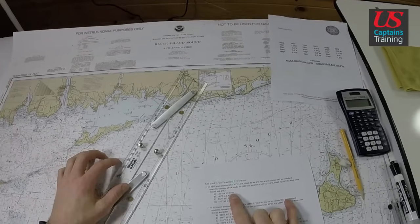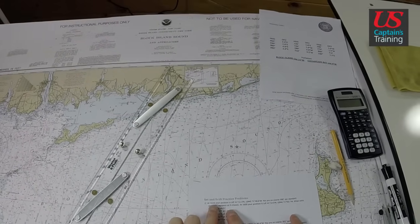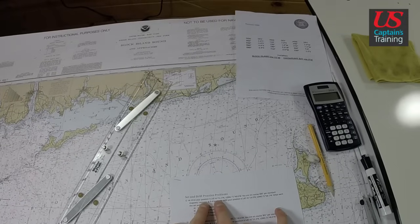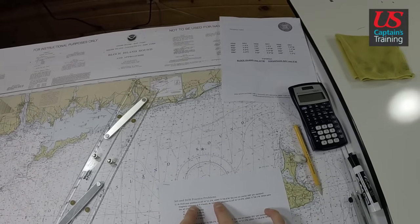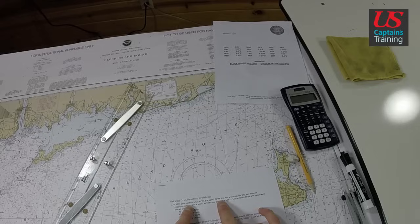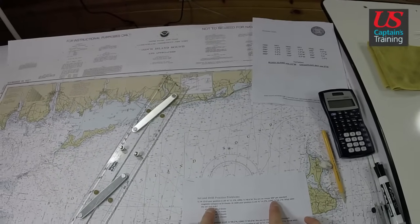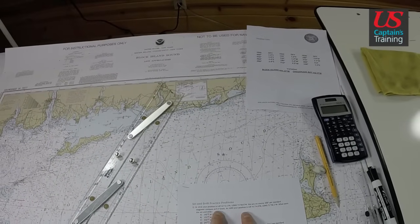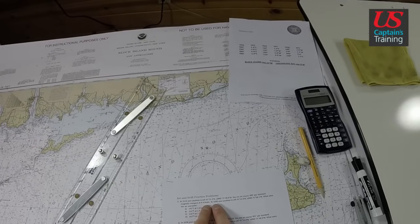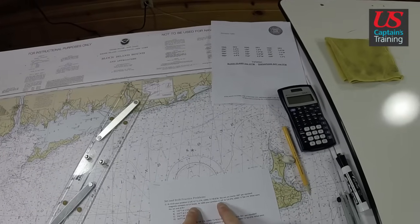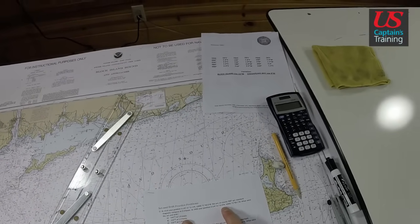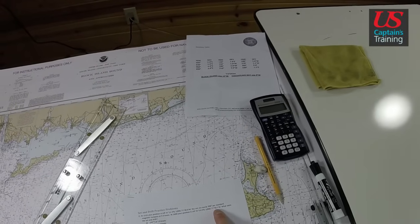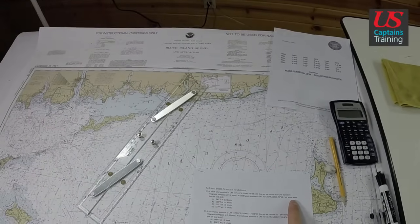Set and Drift, Practice Problem 1. At 1516, your position is 4111.3, longitude 7148.6. You're on course 300 per standard magnetic compass at 9.4 knots. At 1600, your position is latitude 4114, longitude 7158.1. What were the set and drift?